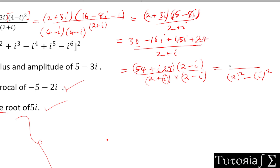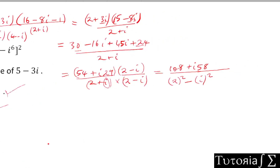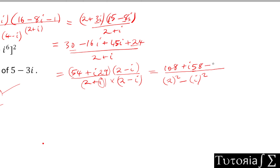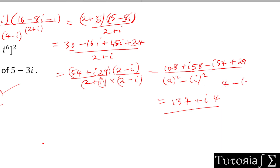Expanding the numerator: 2 × 54 = 108, 2 × 29i = 58i, then -i × 54 = -54i, then -i × 29i = +29. So the numerator simplifies to 108 + 29 = 137, and 58i - 54i = 4i. The denominator is 2² - i² = 4 - (-1) = 5. So the result is (137 + 4i) / 5.